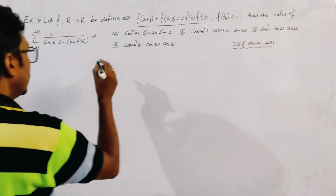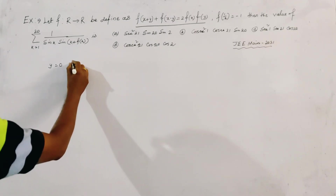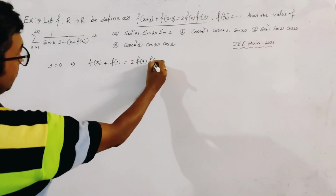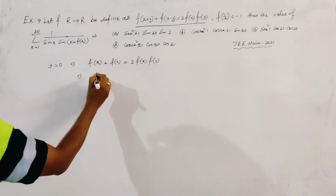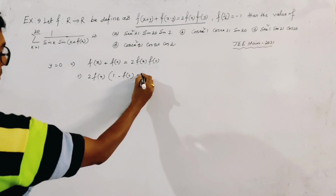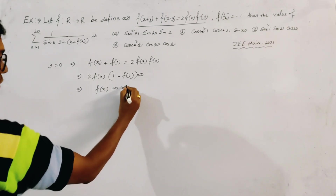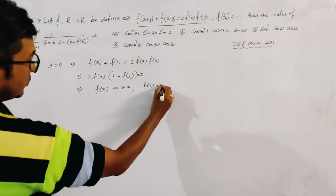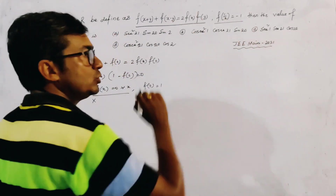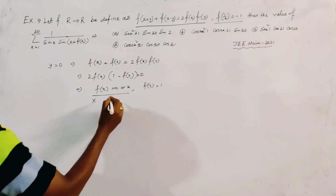We first put y = 0 in the relation. Then we get f(x) + f(x) = 2·f(x)·f(0), which gives f(x)·(2)(1 - f(0)) = 0. So we get two options: either f(x) = 0 for all x, or f(0) = 1. The first option is not correct because f(1/2) = -1, so f(1/2) cannot be 0. Therefore f(0) = 1.